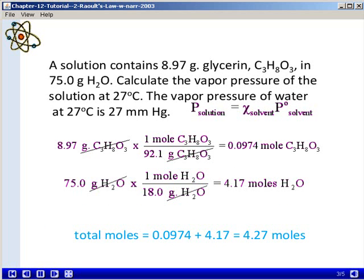So we'll start by converting 8.97 grams of glycerin to moles of glycerin. Using the periodic table, we calculate the molar mass of glycerin to be 92.1 grams.